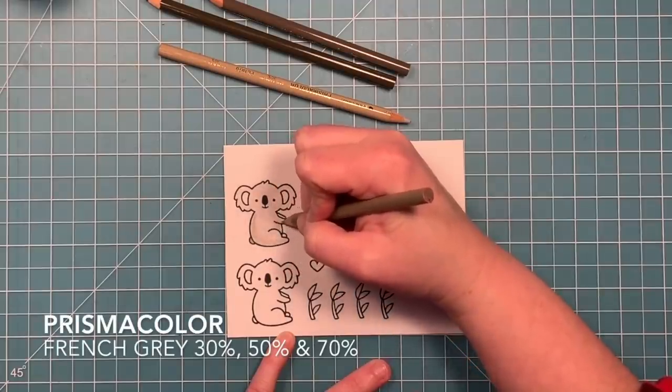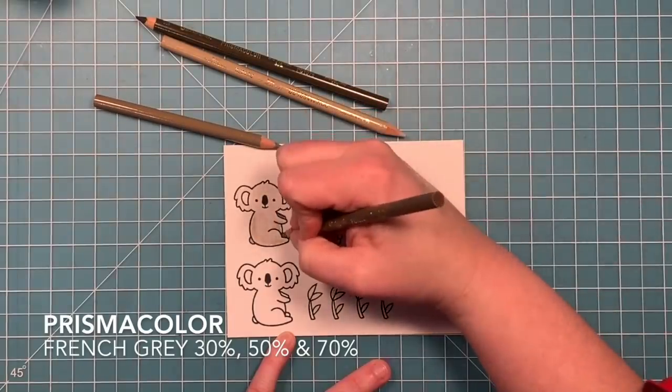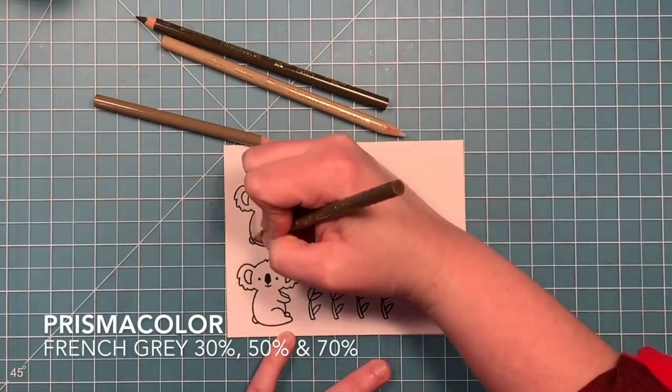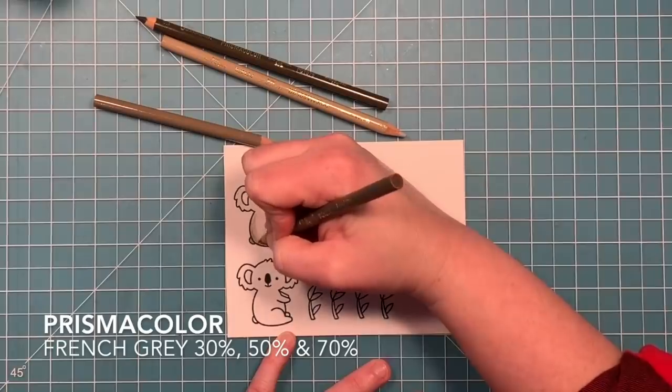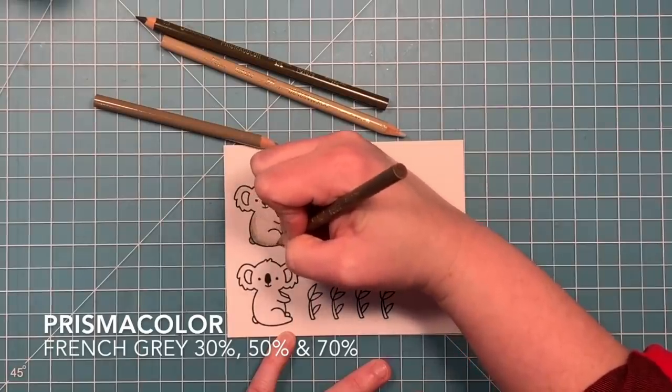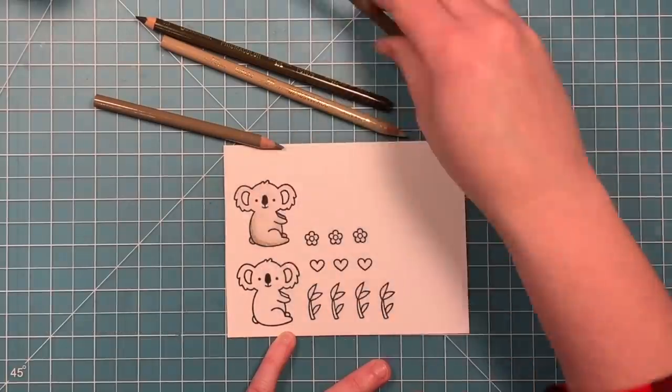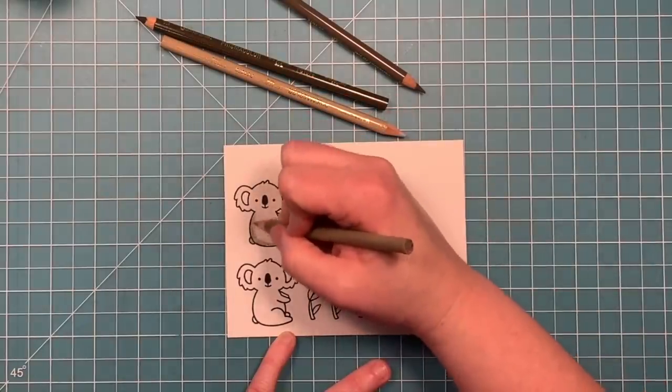I'm going to speed things up a little bit. I'm going in with a 70% French gray and I'm just adding more darker shadow to the edge. I'll just go back and forth.